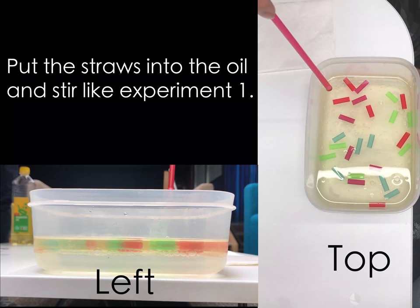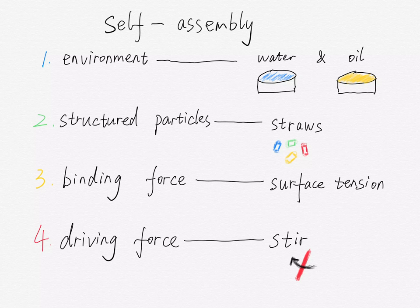In conclusion, we could see the four main components in the process of self-assembling. We change the surface tension through changing the environment — the water and the oil.